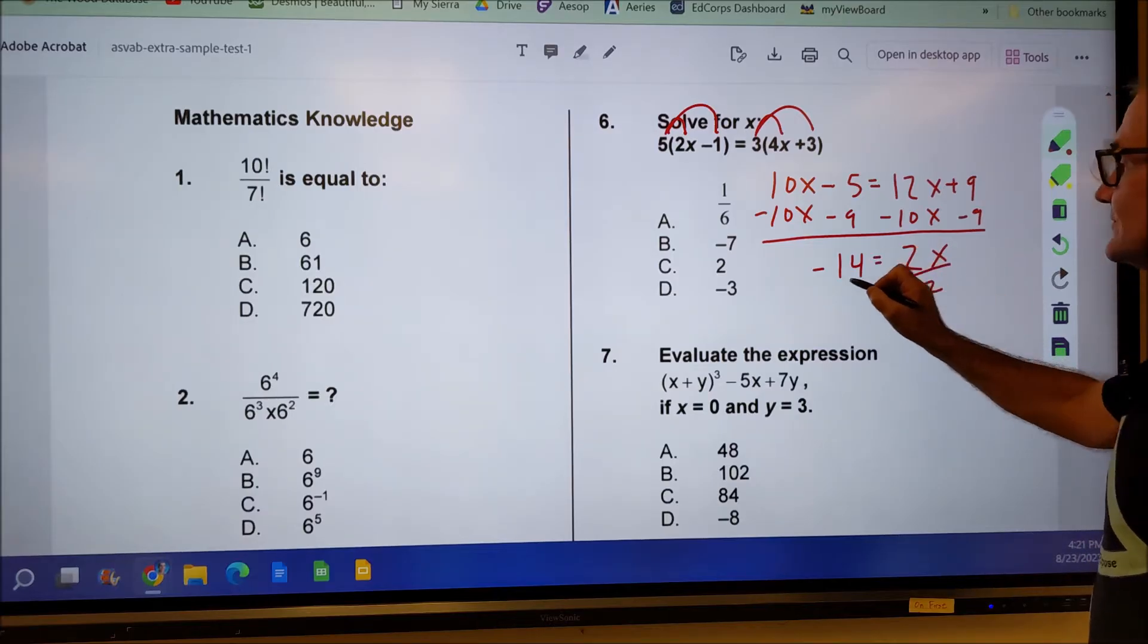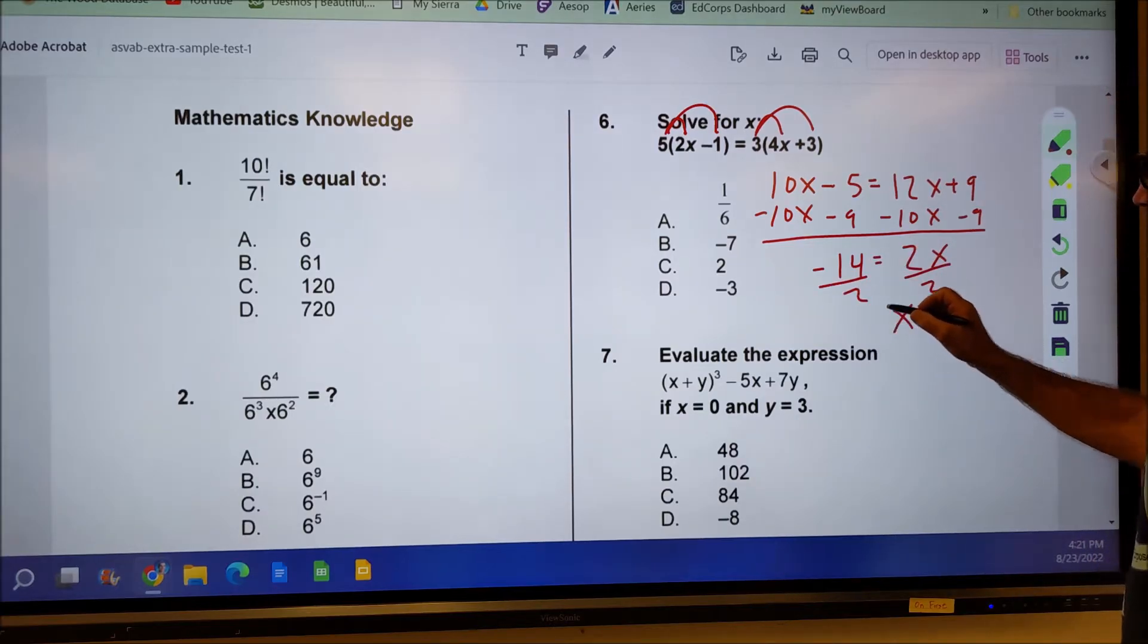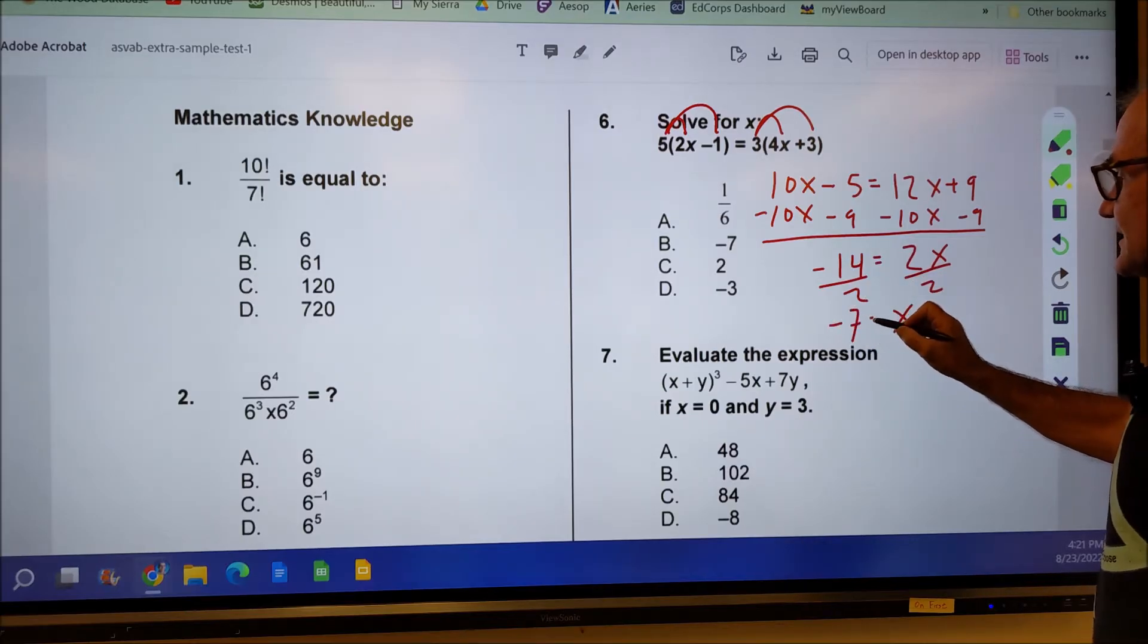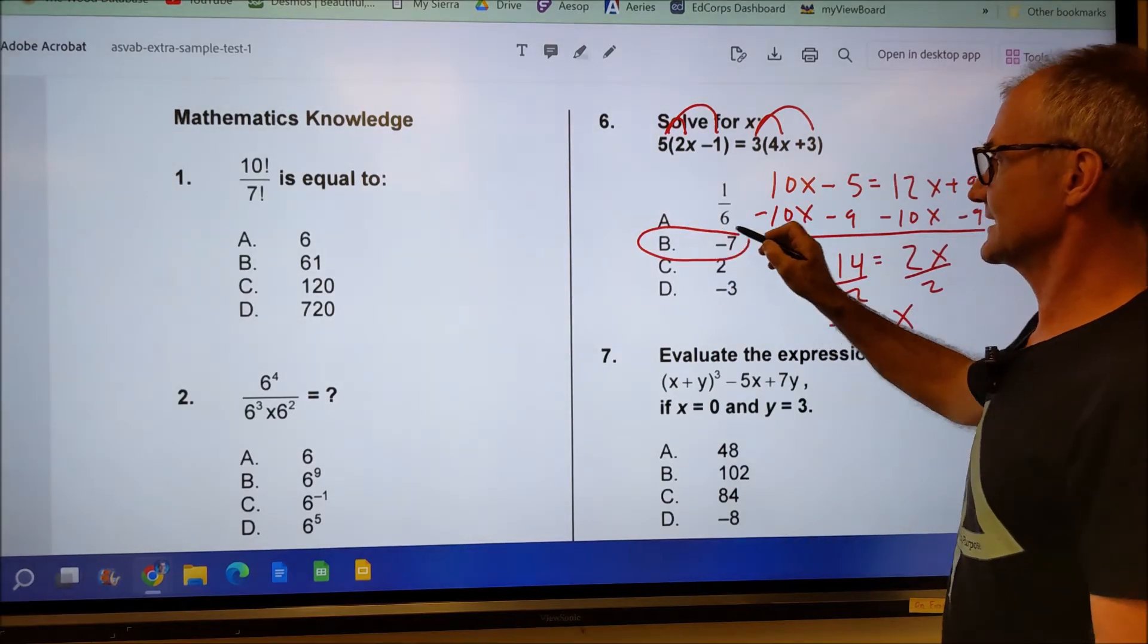Divide both sides by the two. That'll give me X by itself. Negative divided by positive's a negative, and that's going to give me negative seven. So X is equal to negative seven.